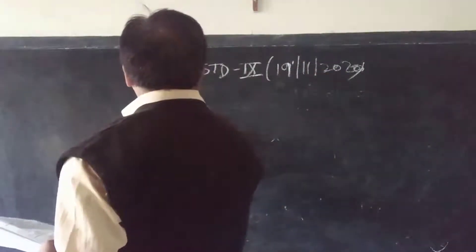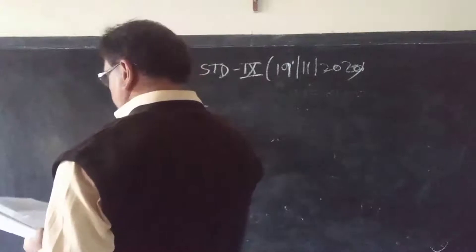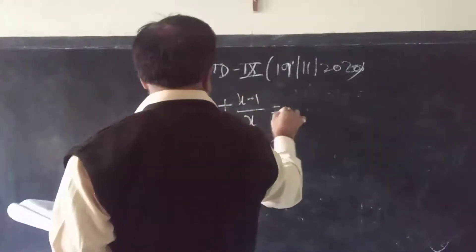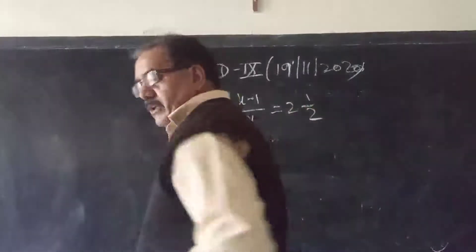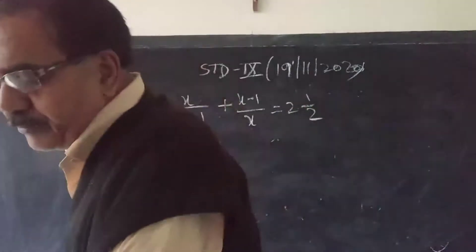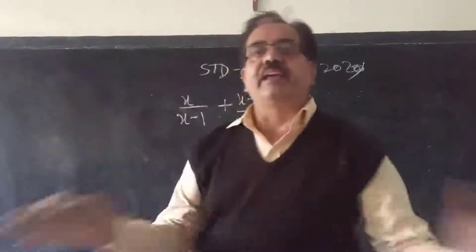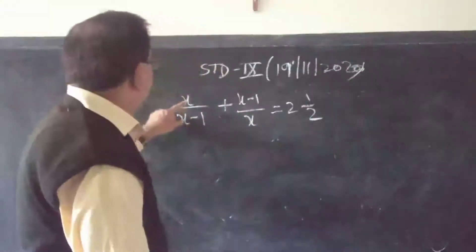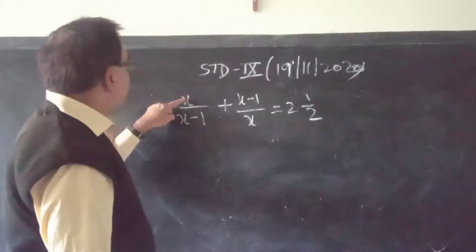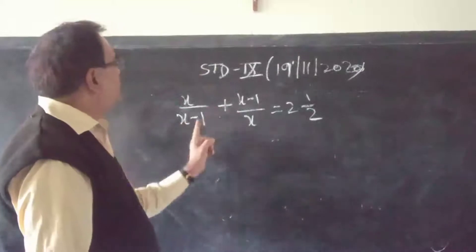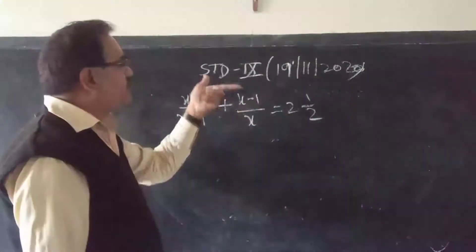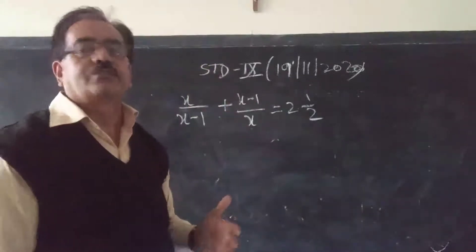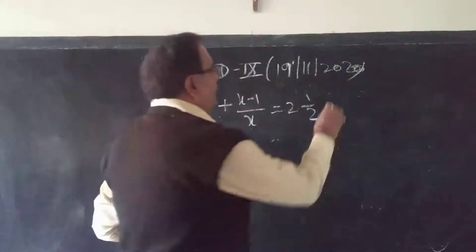The first question is: x/(x−1) + (x−1)/x = 5/2. This type of question you can solve by taking LCM. Or another way — notice that the second term is the reverse of the first term. So by substitution you can solve this as well. Let's see.